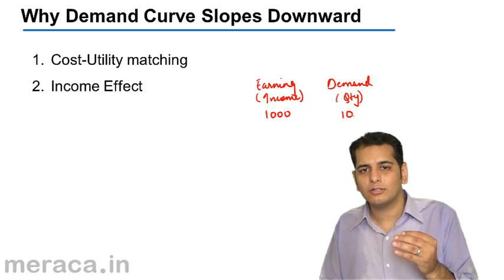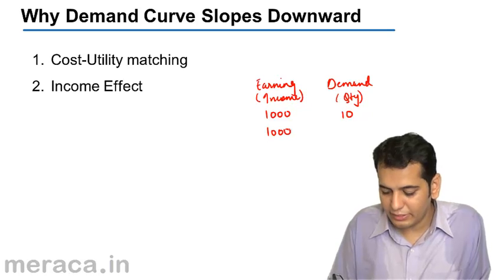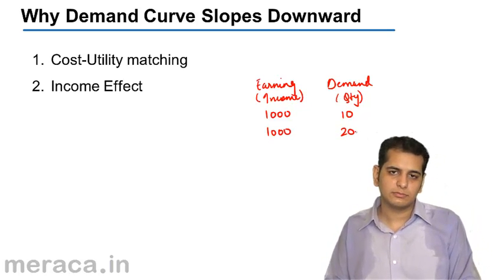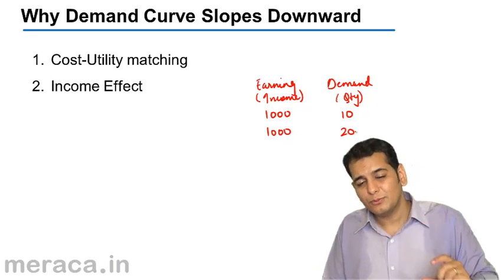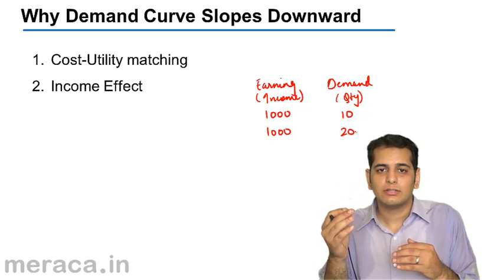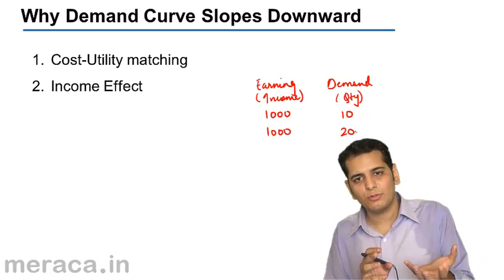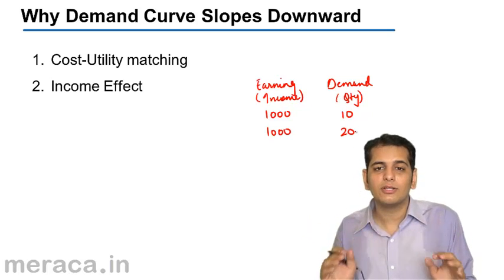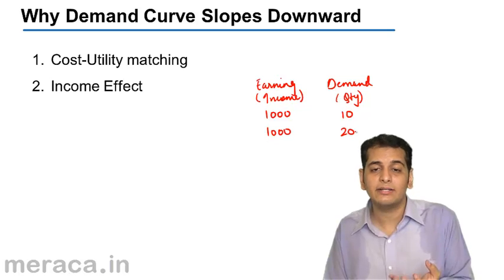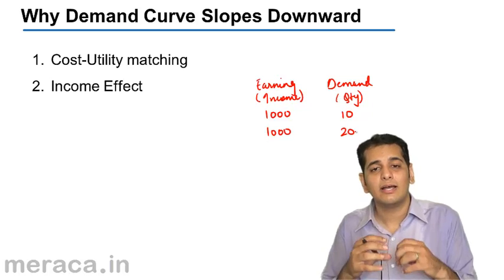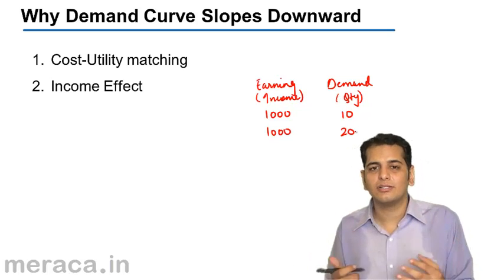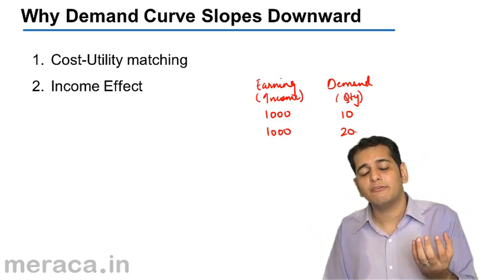Now if the price of the product falls to rupees 50, income remaining the same, how many units can he purchase? He can now purchase 20 units of the same product. What has happened here is that though the absolute income in the hands of the consumer has remained the same, the real income has increased. He was earlier able to buy 10 products; now he is able to buy 20 products with the same income, because the purchasing power of the money in his hand has increased. So with the fall in price, he can purchase more of that commodity.